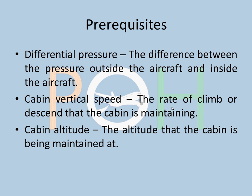Before we start pressurization, I want you to know these three definitions. Differential pressure is the difference between the pressure outside the aircraft and inside the aircraft. Cabin vertical speed is the rate of climb or descent that the cabin is being maintained at — so if your aircraft is climbing at a certain rate, that is not the same rate the cabin will climb at. Cabin altitude is the altitude at which the cabin is being maintained, which is also different from your aircraft altitude. For example, if your aircraft is at 35,000 feet, your cabin altitude might be somewhere around 7,000 to 8,000 feet.